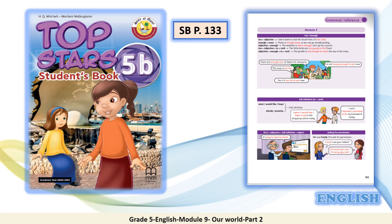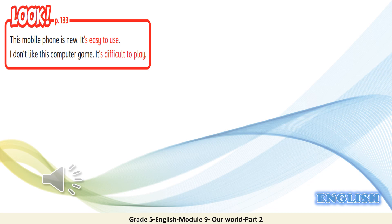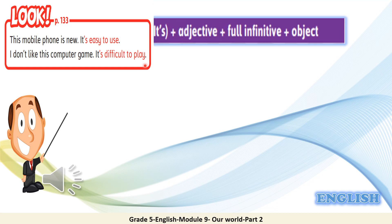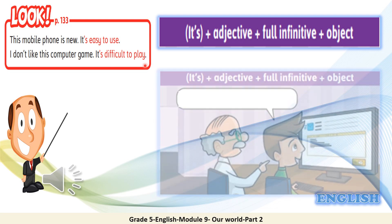Now for further information, let's go to the back of the student's book, page 133. Look: 'This mobile phone is new. It's easy to use.' And: 'I don't like this computer game. It's difficult to play.' These are examples using the full infinitive — 'It's easy to use,' 'It's difficult to play.' Here it's: it's plus an adjective, plus full infinitive.